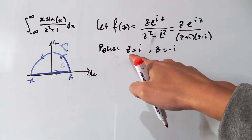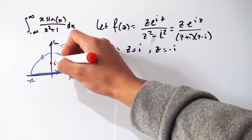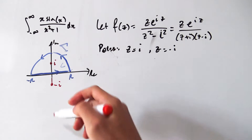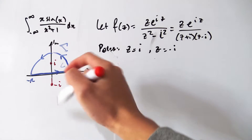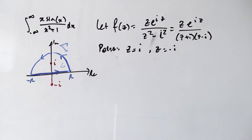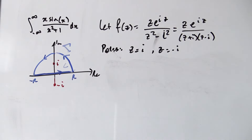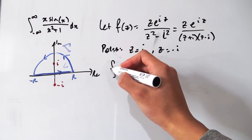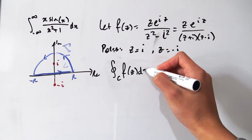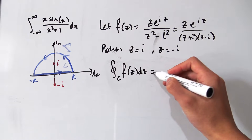Notice that the poles of our function are at z = i and z = −i. Our contour actually encloses one of these poles — the one at z = i — so we can make use of Cauchy's residue theorem when calculating the value of this contour integral. So the contour integral over C of f(z) dz equals...